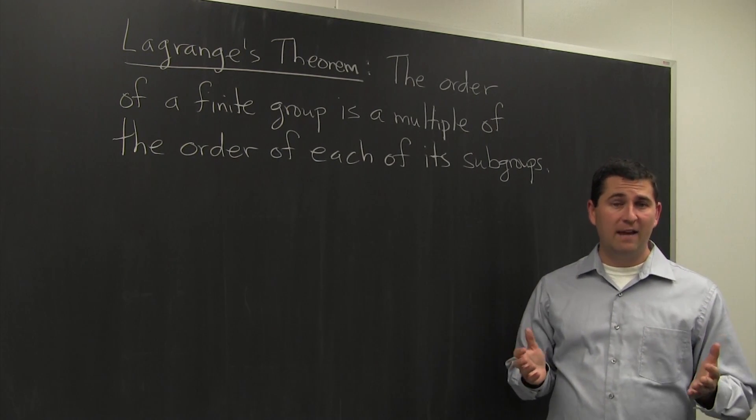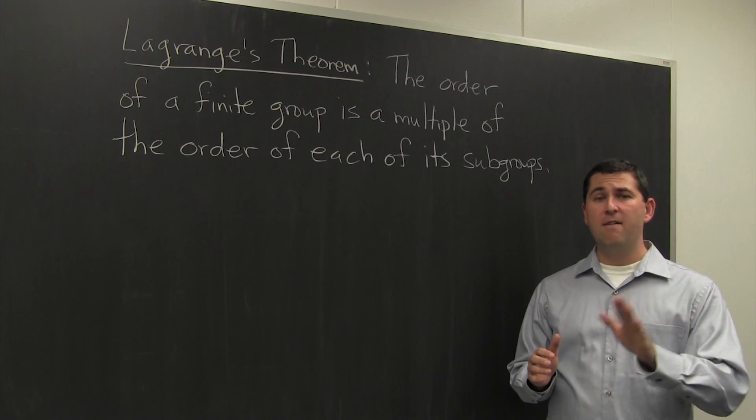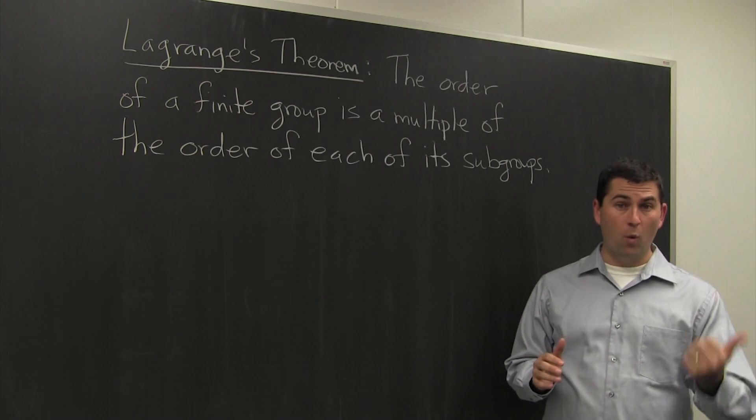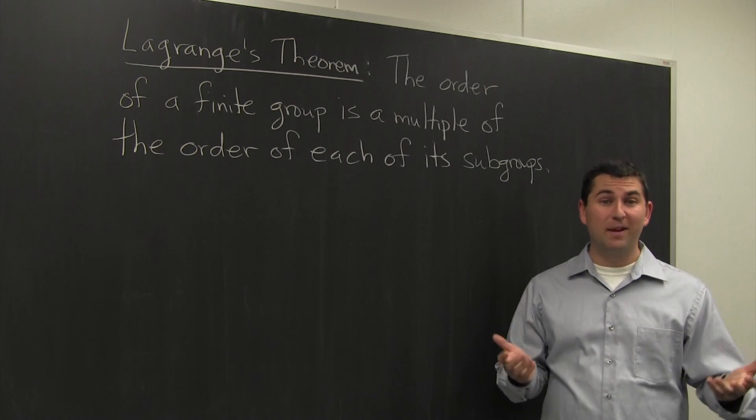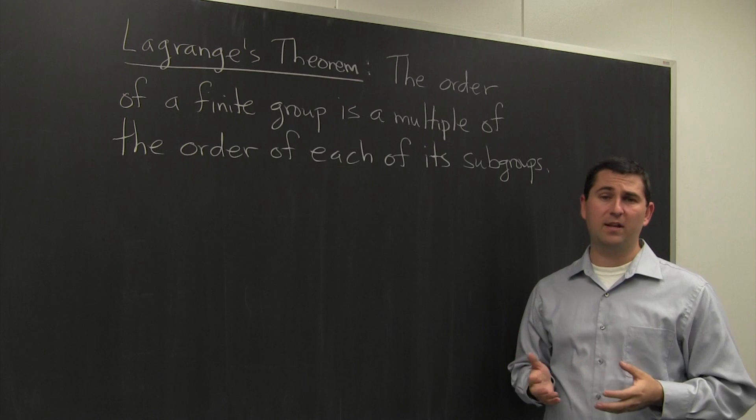For example, if a group has order 31, then we know that every subgroup must have order either 1 or 31, because 31 is prime. Of course, that means every subgroup is either the trivial subgroup or the entire group itself.